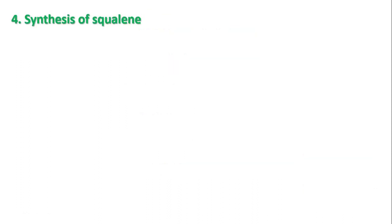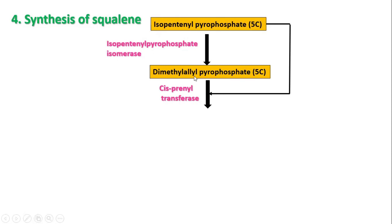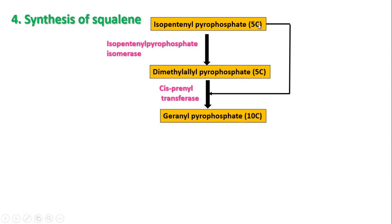Next is the synthesis of squalene. There is polymerization of six isoprene units to form squalene. The isopentanyl pyrophosphate (isoprene unit) in the presence of isomerase enzyme forms dimethylallyl pyrophosphate. Then another isoprenoid unit attaches to form geranyl pyrophosphate, which is a 10-carbon compound (5+5 carbons).